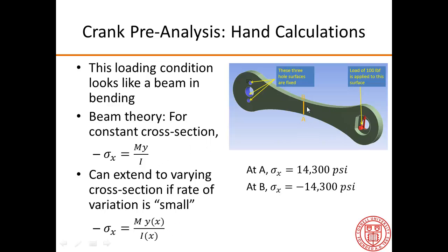So what we can do is we can use the local i and y over here and plug that into this m y by i. And if we do that, we can predict the values of the bending stress at A and B and they are going to vary linearly between that. So that's something to compare to the ANSYS result.